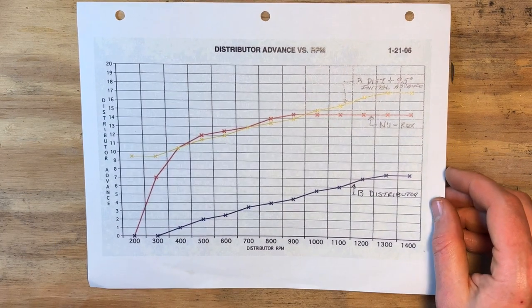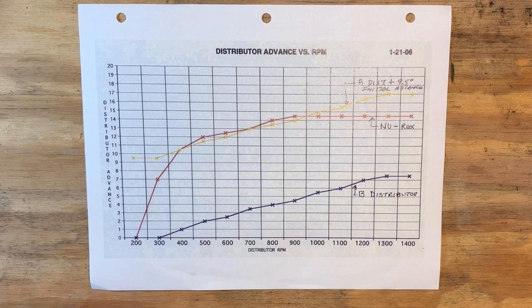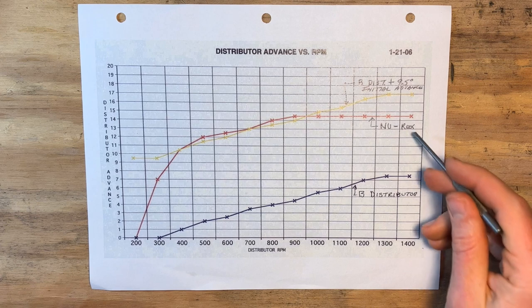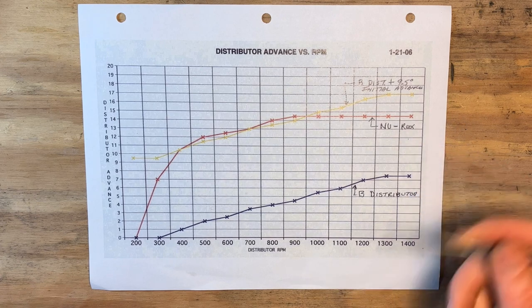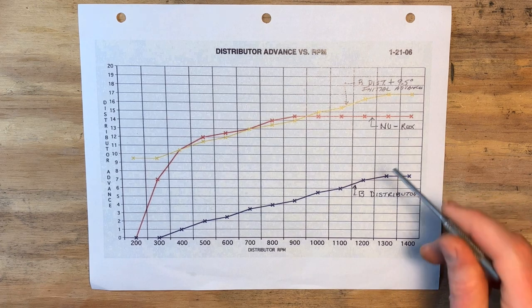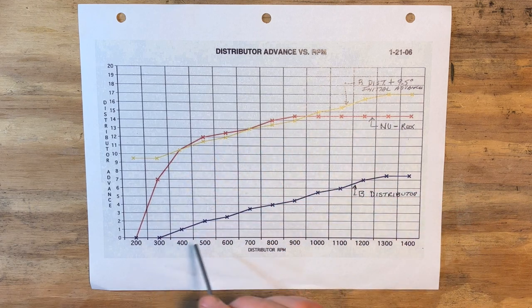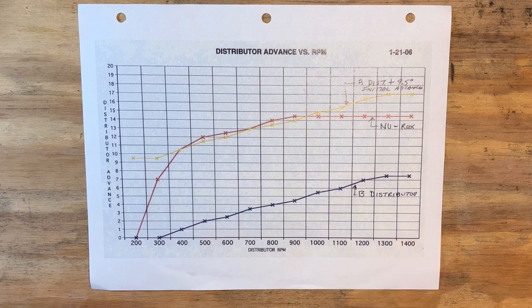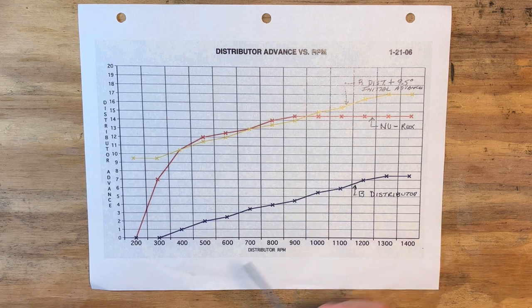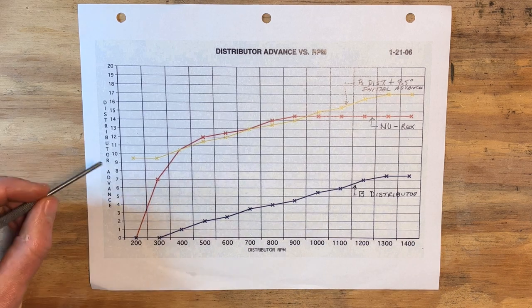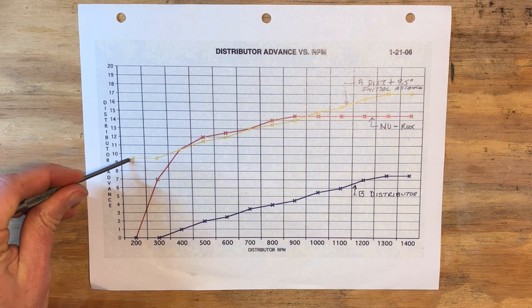This is a timing curve recorded for a B distributor by Jim Kellett in 2006. He also recorded a Nurex automatic timing device so that you can compare the two. Notice that while the Nurex timing curve is actually a curve, the B curve is essentially a straight line. That's typical of centrifugal advance mechanisms that use springs. The factory instruction for the Model B engine was to set the initial timing at 19 degrees before top dead center.